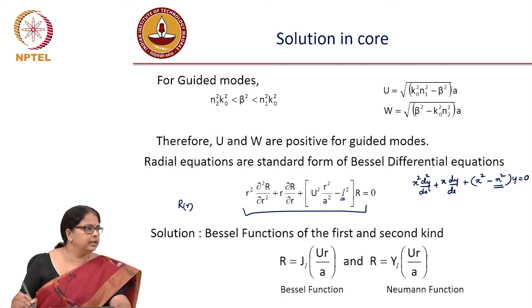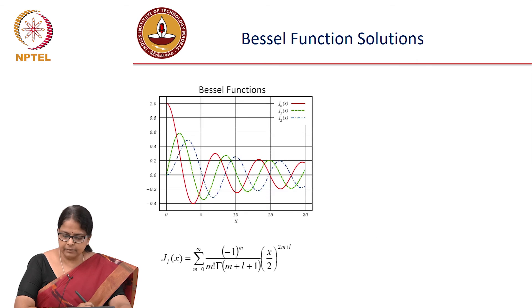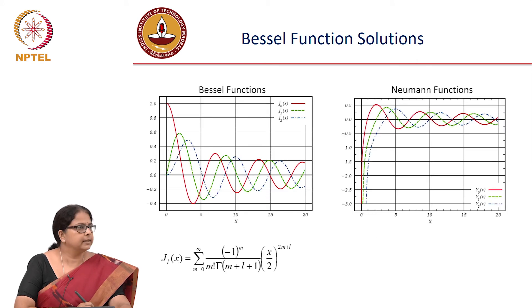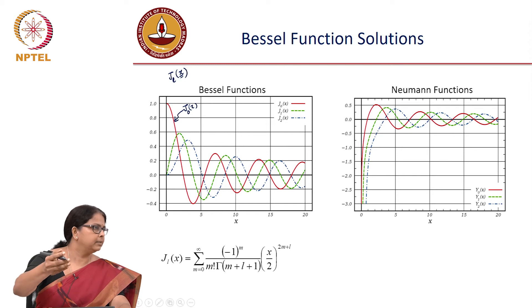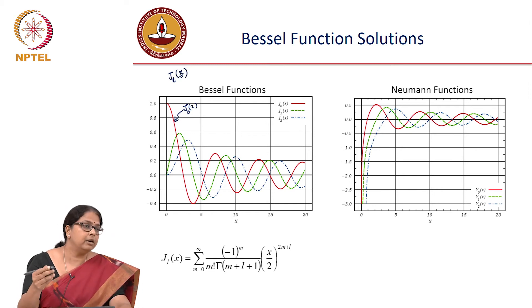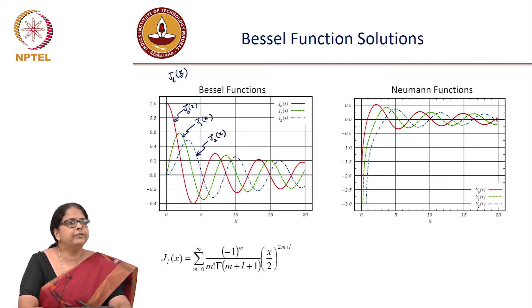So before we go for that, one is a Neumann function and the Bessel function. Both will satisfy this differential equation. And the functions are this, it looks like this. The Bessel functions are this. So this red one is your j naught x. As I said, jl of x, of jl, our argument is u r by a, but there is a variable there. Jl of x will depend on what is the value of l and for l equal to 0, it looks like this. L equal to 1, this is j1 of x, this is j2 of x and so on.